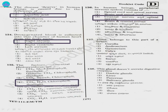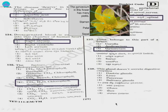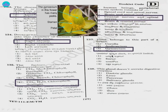Question 137. Pistil belongs to this part of the flower: 1) corolla, 2) androecium, 3) gynoecium, 4) calyx. Answer is option 3, gynoecium, because the gynoecium in the flower has many pistils.